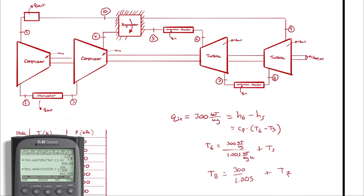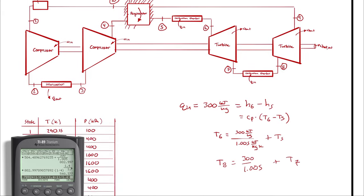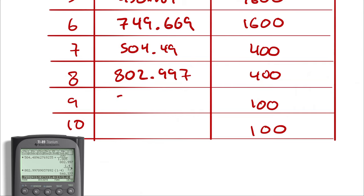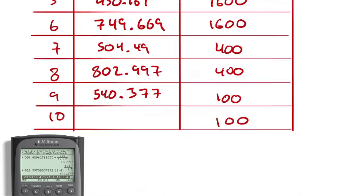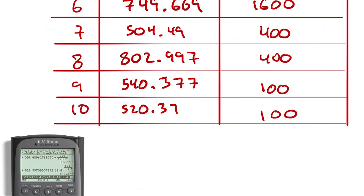From 8 to 9, using isentropic ideal gas equations: T9 = T8 × (1/4)^((k−1)/k) = 802.997 × (1/4)^(0.4/1.4) = 540.377 K. Then for state 10, going back through the regenerator: since the heat rejected from the hot side equals the heat gained on the cold side, the delta T from 9 to 10 equals the delta T from 4 to 5, which is 20°C. Therefore T10 = 540.377 − 20 = 520.377 K.